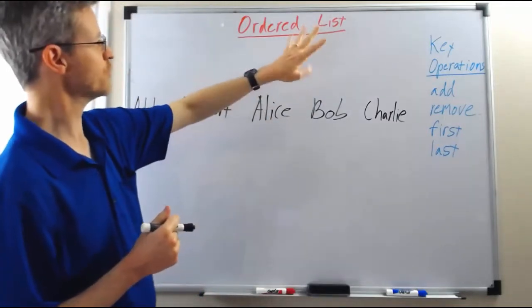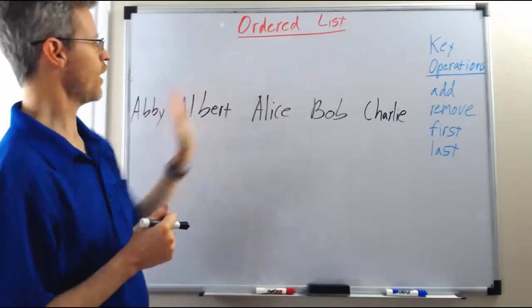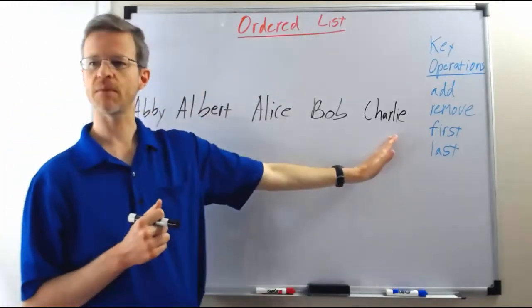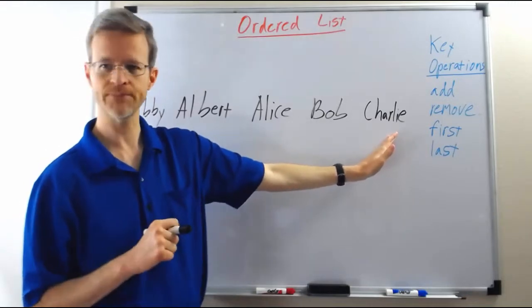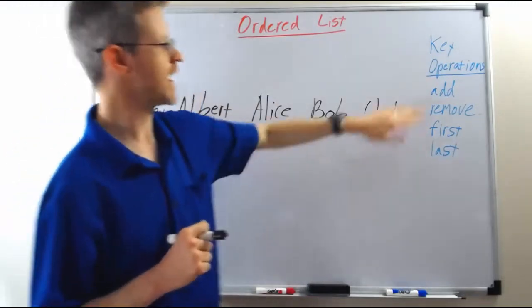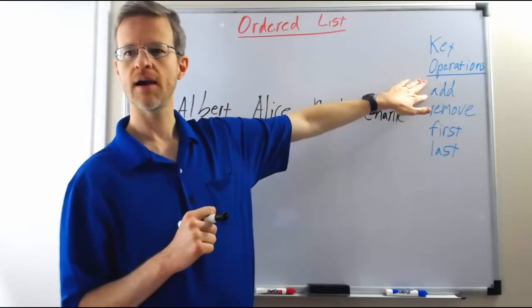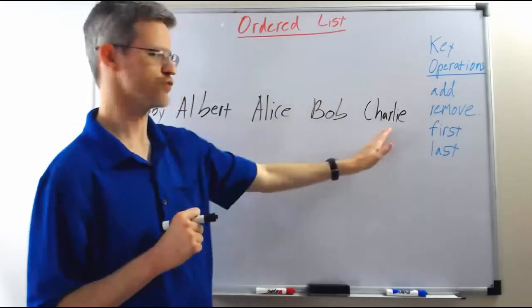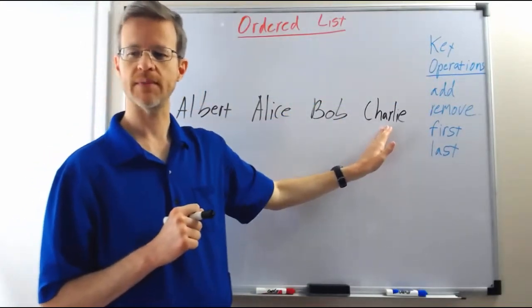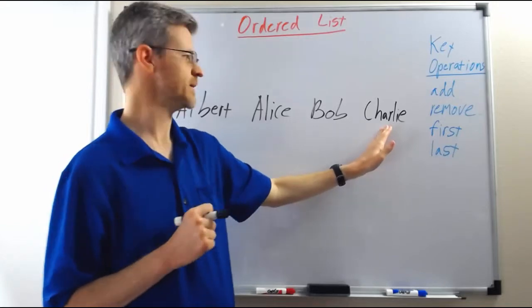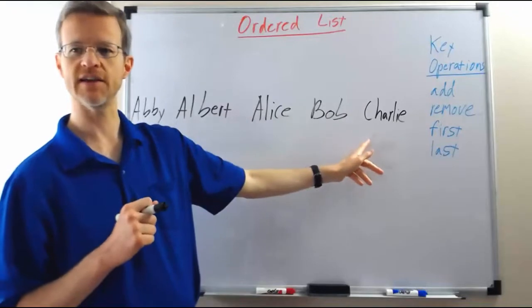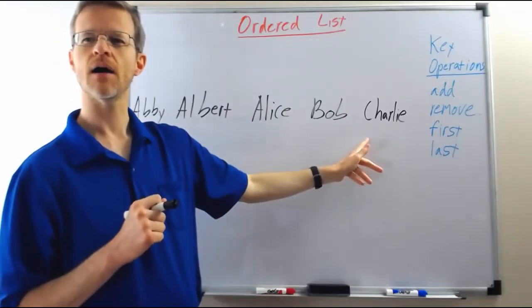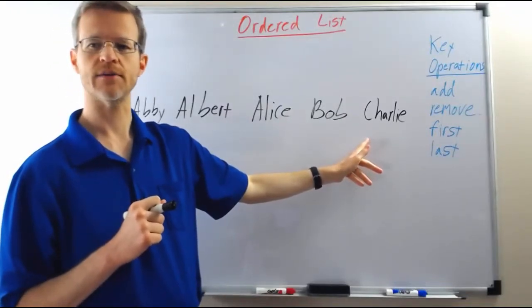So key differentiators for the ordered list are that it always keeps everything in it in some predetermined order, such as alphabetical order or lexicographic order, and that it only has one add operation because any time we add to an ordered list, the ordered list determines where the item is placed. We don't determine it. It is a property of the element, how the element compares to other elements of the list that determines where the item is placed.